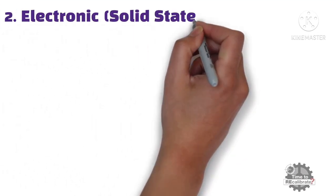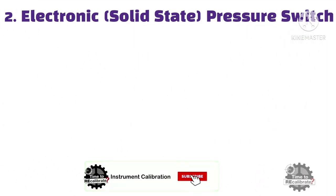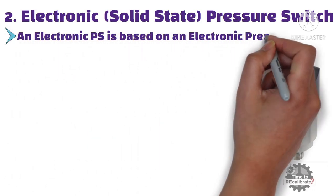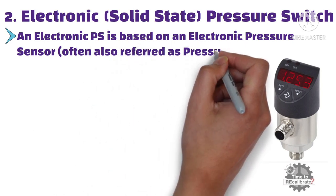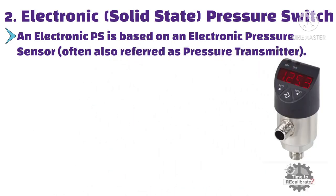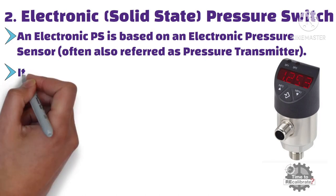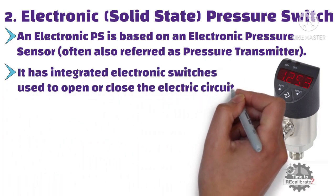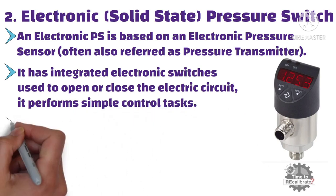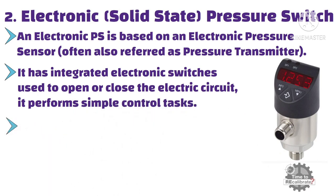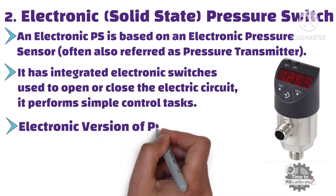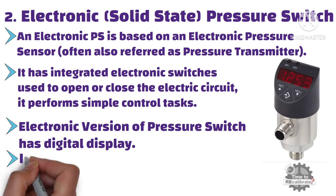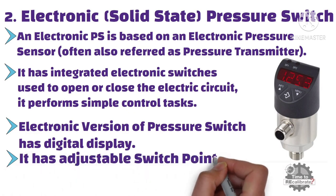Secondly, what is an electronic or solid state pressure switch? An electronic pressure switch is based on an electronic pressure sensor, and it is often referred to as a pressure transmitter. It uses integrated electronic switches to open or close the electric circuit and performs simple control tasks. As you can see from the picture, the electronic version has a digital display, adjustable switch points, and considerably higher reliability.